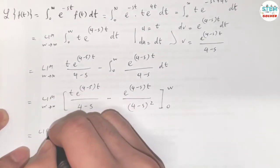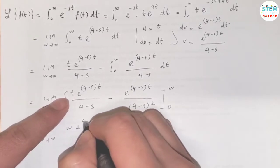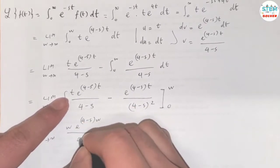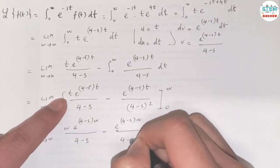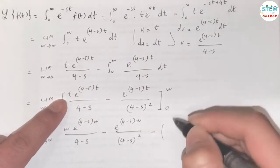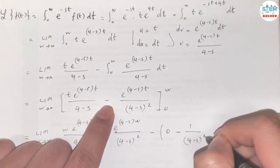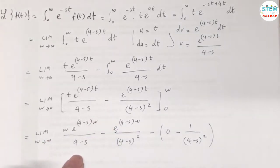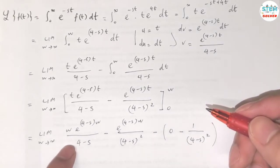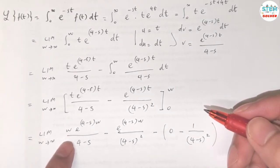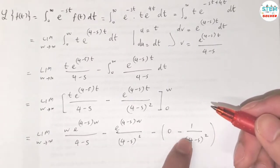So plug in w, we have the limit as w goes to infinity of w e to the 4 minus s times w over 4 minus s minus e to the 4 minus s times w over 4 minus s squared. Minus plug in 0, we get 0 minus 1 over 4 minus s squared. So remember that for the Laplace transform to exist, f(s) has to converge. So for this one, it already goes to a number, so we're good.